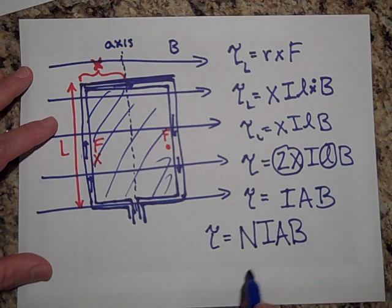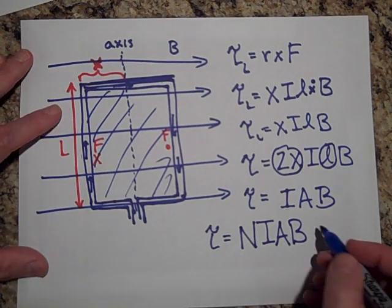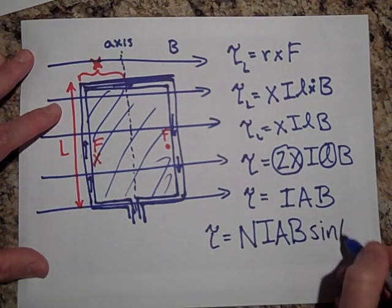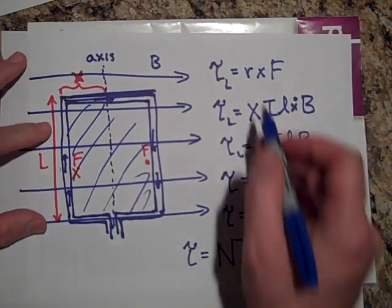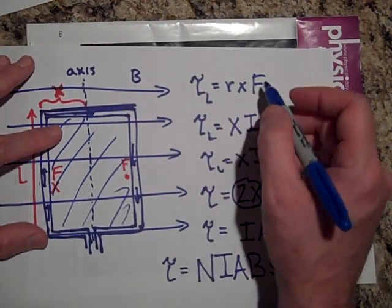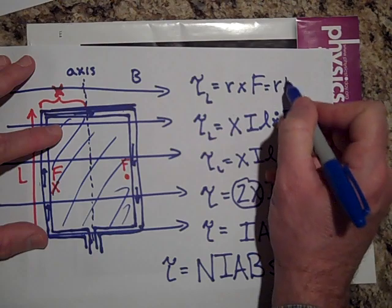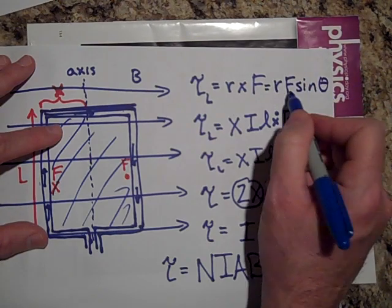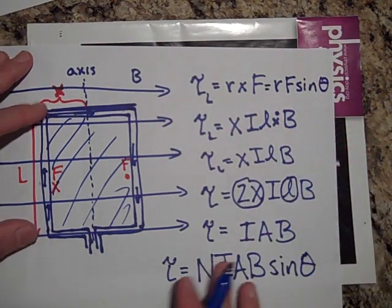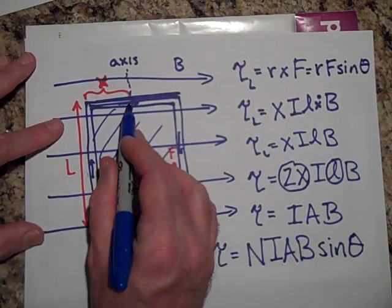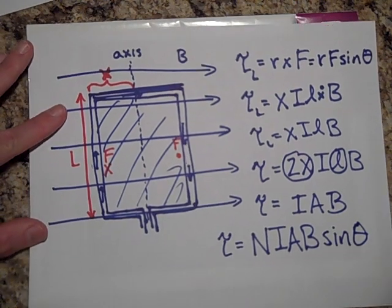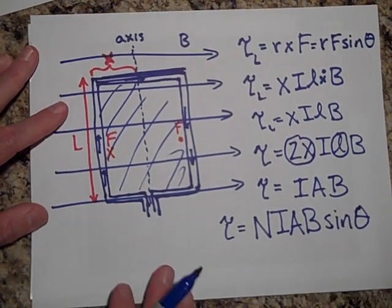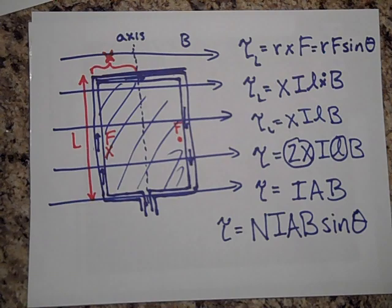There's one more thing: the torque is also times sinθ, giving τ = N·I·A·B·sinθ. That sinθ comes from r cross F, which is really r·F·sinθ, where θ is the angle between r and F — r being the moment arm distance and F being the downward force. More on that in another video or in class.